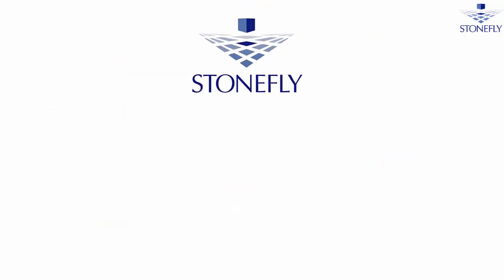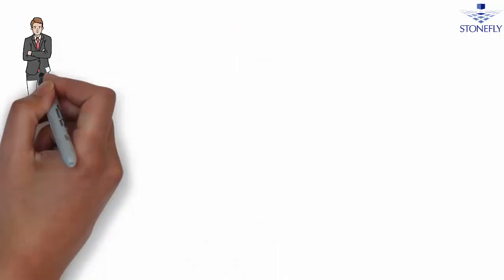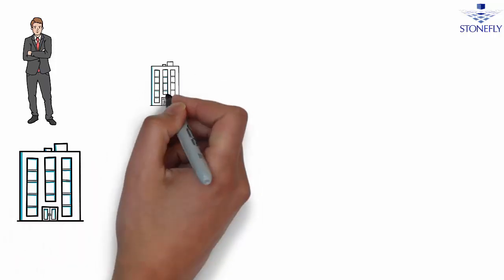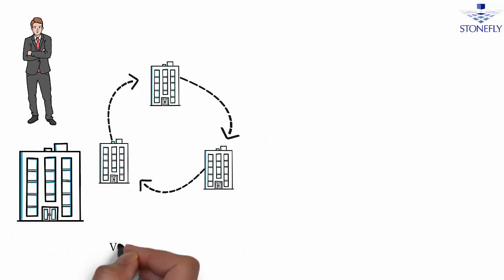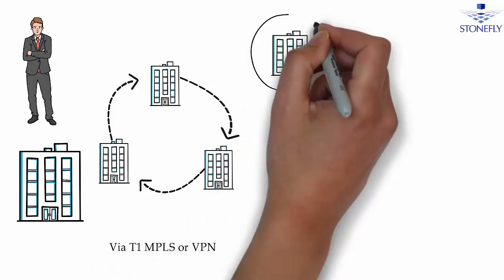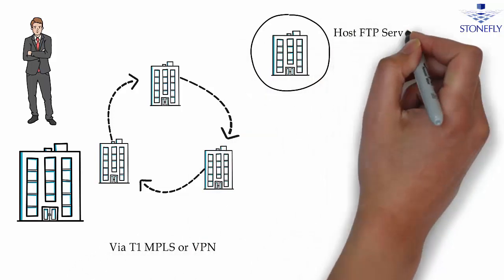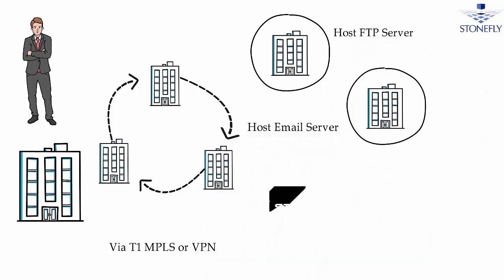Here is where the Stonefly Stone Van Accelerator comes in. This is Mark — he had the same issue as Bob, and then he used Stone Van for data transfer. He has an organization with multiple branches connected to each other via T1, MPLS, or VPN. One of these branches is hosting the FTP server and the other one is hosting an email server.